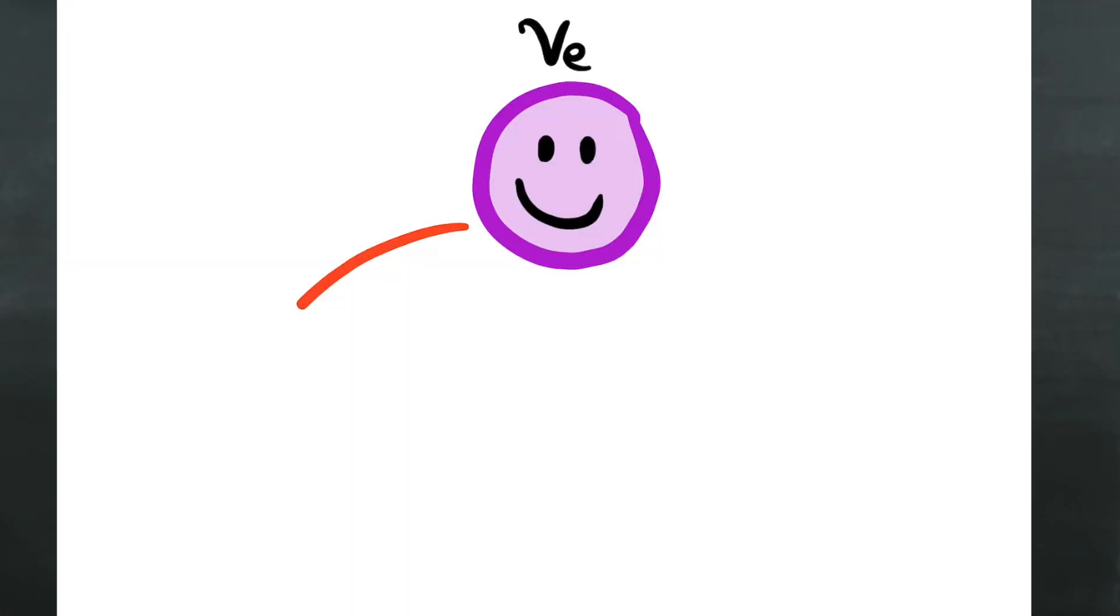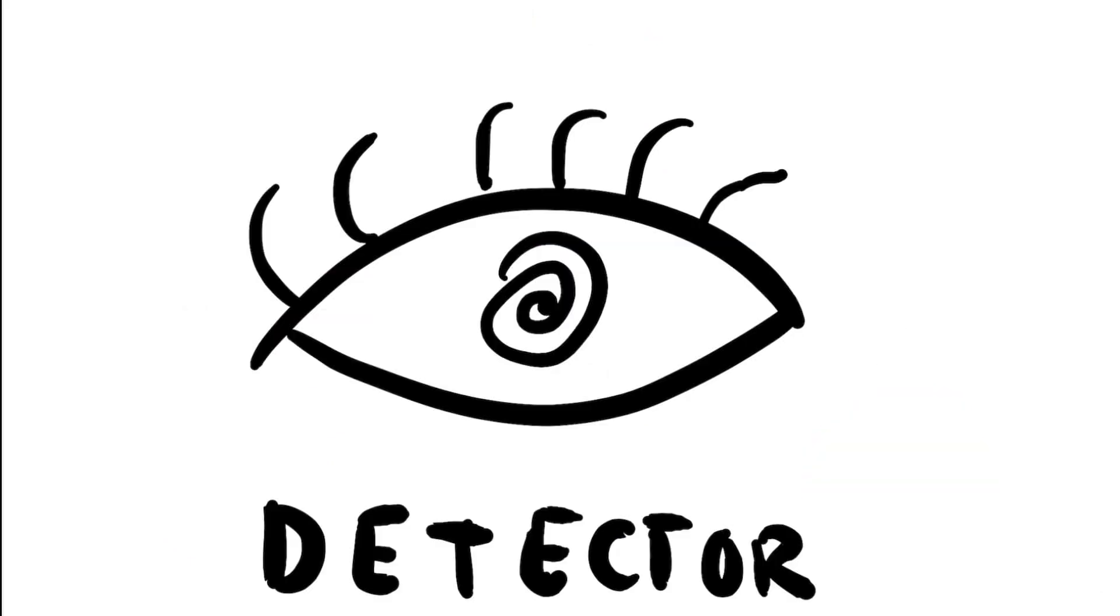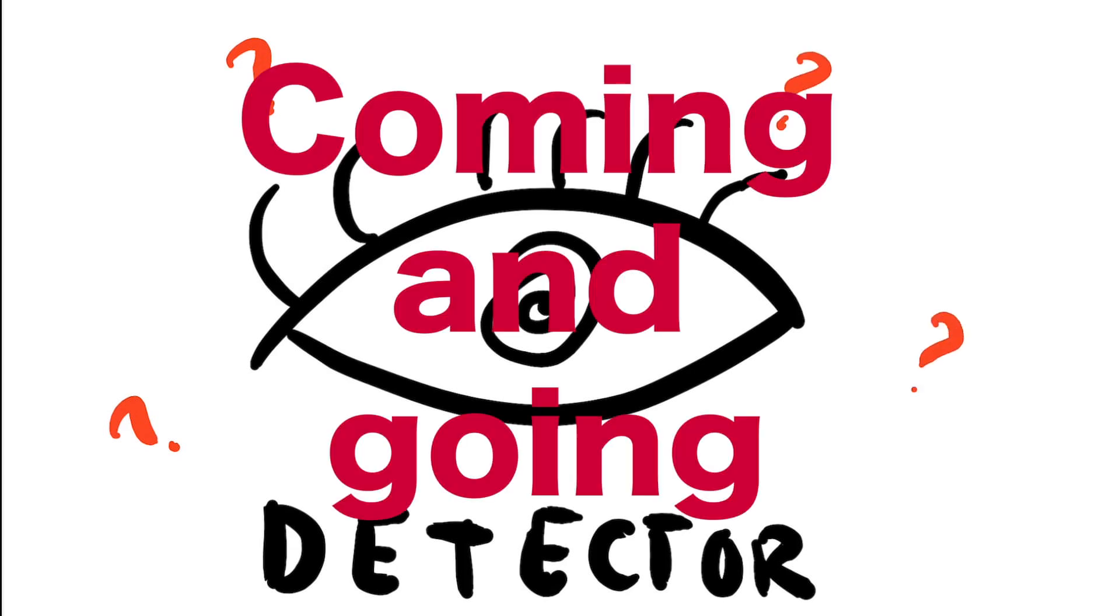So, where are our missing neutrinos? Well, they were always there. It was just that they were turning into another flavor of neutrino that the detector could not taste. So, to the detector, they seem to just disappear, to be coming and going.